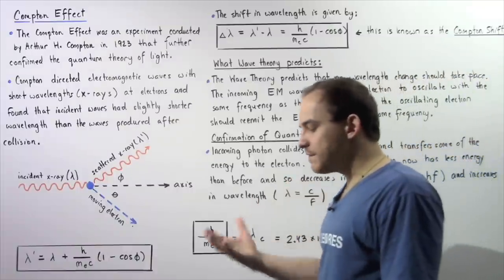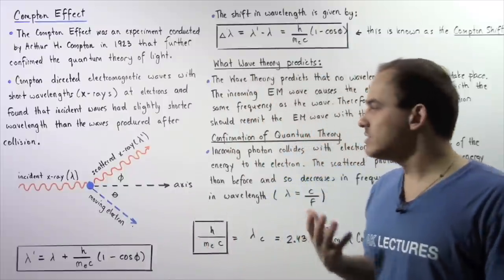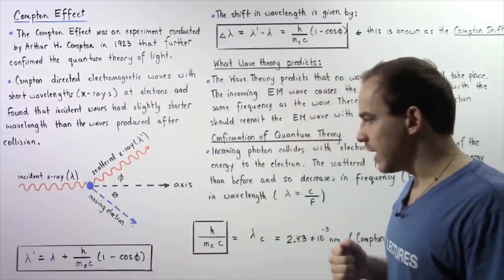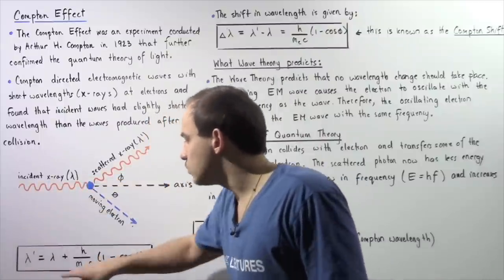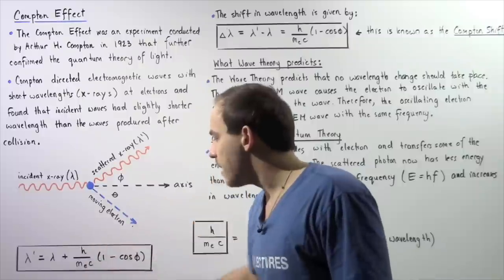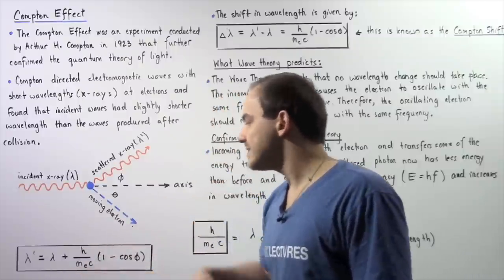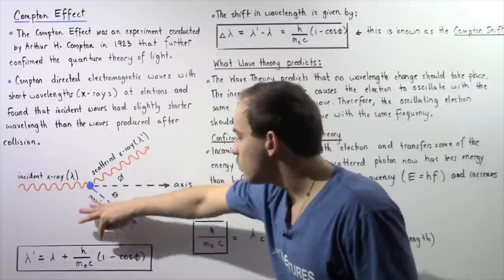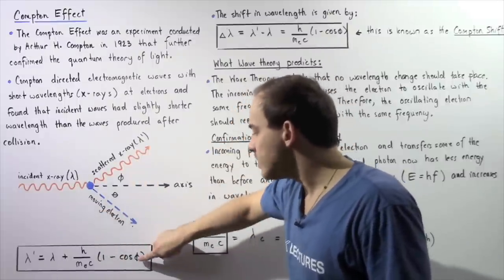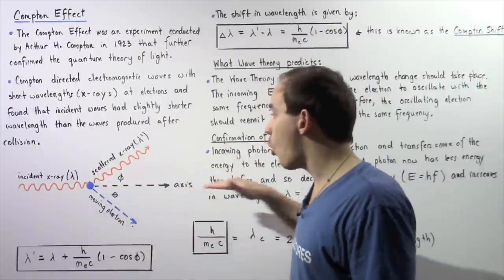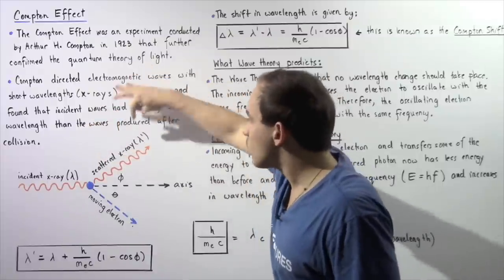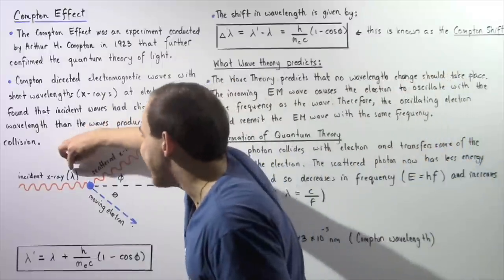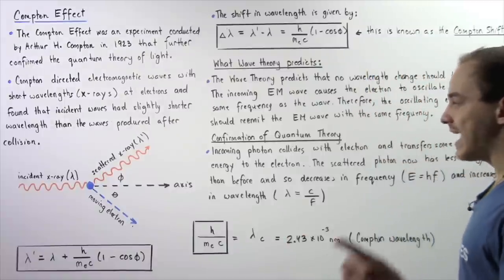Using the conservation of momentum and the conservation of energy, he was able to derive the following equation: lambda prime equals lambda plus H divided by Me, the mass of the electron, multiplied by C, the speed of light, where H is Planck's constant, and this is multiplied by 1 minus cosine of the angle phi. The angle phi is the angle between the horizontal axis and the scattered X-ray. Lambda prime is the wavelength of the scattered X-ray, and lambda is the wavelength of the incident X-ray.